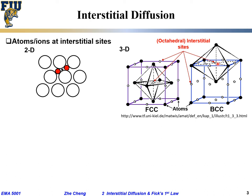For BCC, the octahedral sites are at the face centers and edge centers. You can draw it yourself and confirm that these are indeed octahedral sites. The impurity or solute atom, if it sits at one octahedral site, may jump from one octahedral site to a neighboring octahedral site.